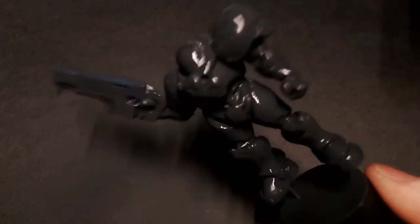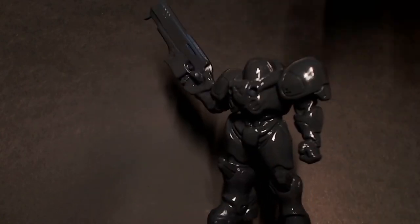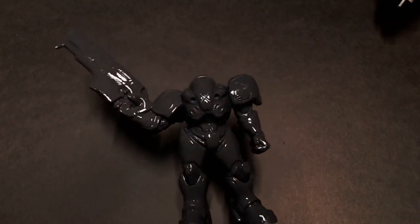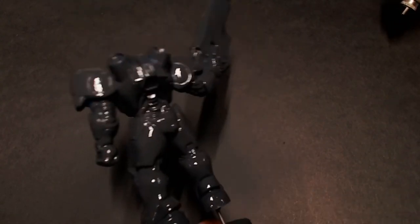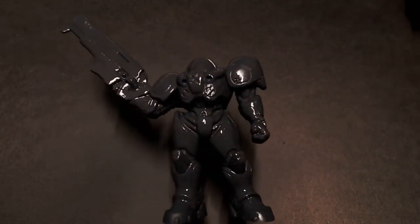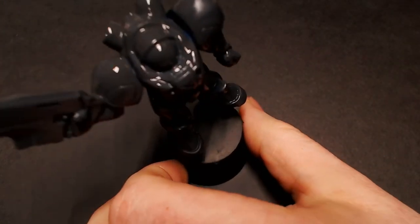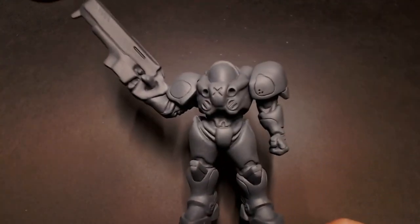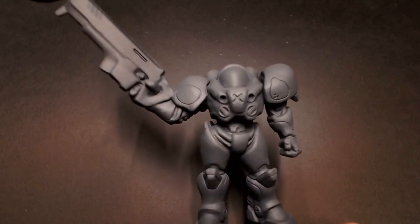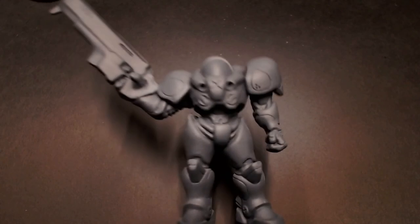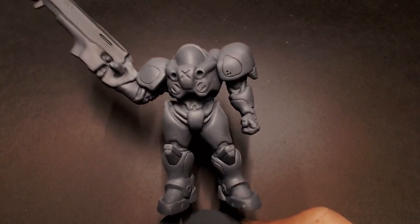Once we get our first primer coat on there I'm just going to take our regular gray Stynylrez primer and hit it with a light second coat so that our shadows and stuff are a little bit darker. It's going to help us know where we need to start painting up all our highlights and everything on the model. All right, here he is with our second primer coat. You can see it's a little bit lighter because it's that basic gray and our details are a little darker, cutting them in a little bit more. And he's ready to paint.